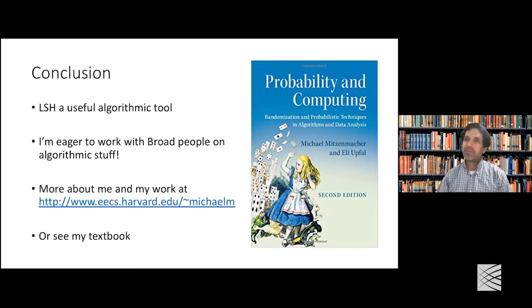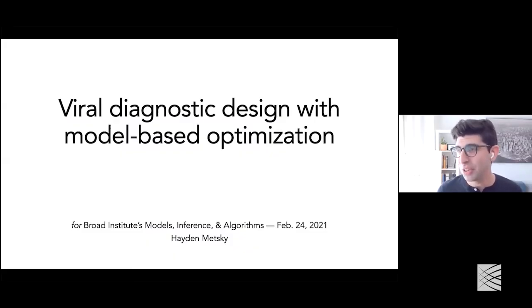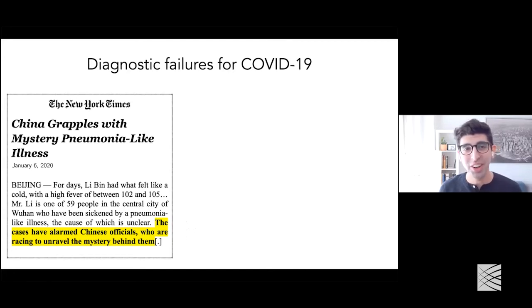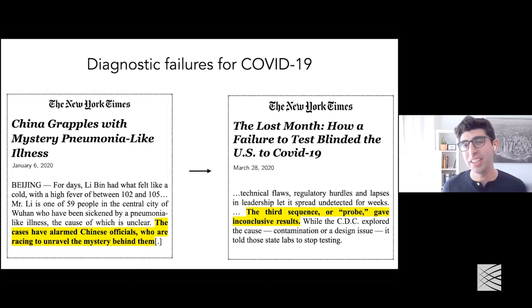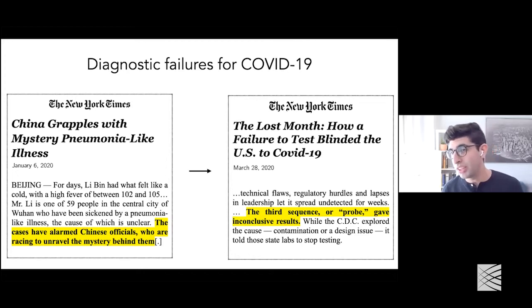Thank you Michael for that wonderful primer. Locality-sensitive hashing — there are two places in particular where there's a really nice application in this work. If you take yourself back a little over a year ago, there was this feeling of how little we knew about this new virus. As soon as COVID hit the U.S., most of that early confusion and chaos almost immediately focused on diagnostics, with widely reported issues about the United States doing a poor job testing last spring.